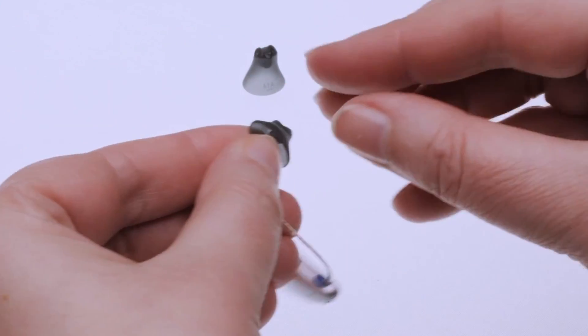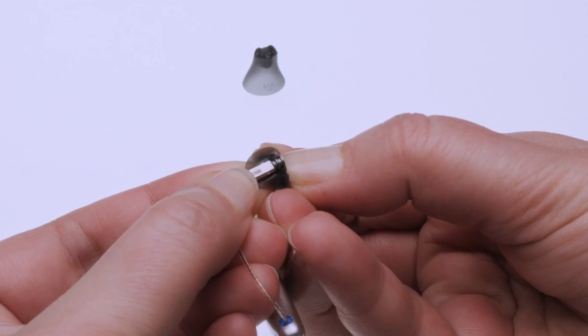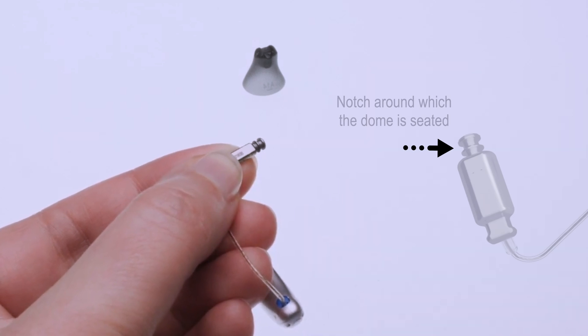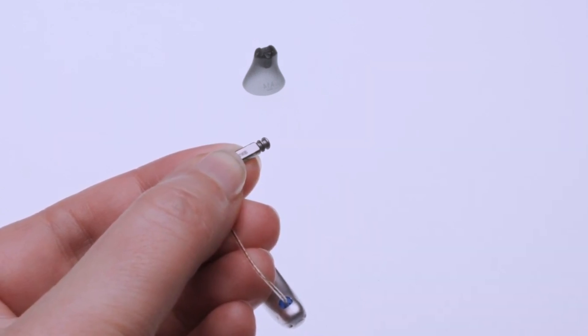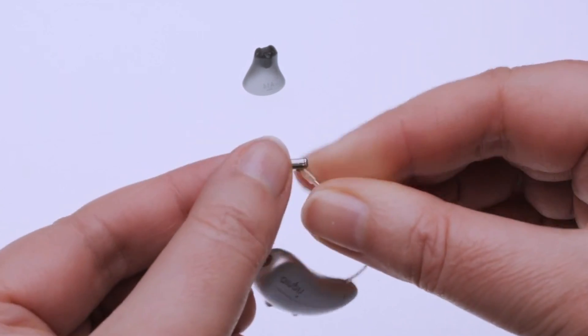Let's talk in more detail about replacing the hearing aid dome. Dome removal requires a gentle bending motion while pulling it away from the receiver. The dome is seated around a notch at the tip of the receiver. When placing the dome back on the receiver, you are trying to push the dome back around the notch.